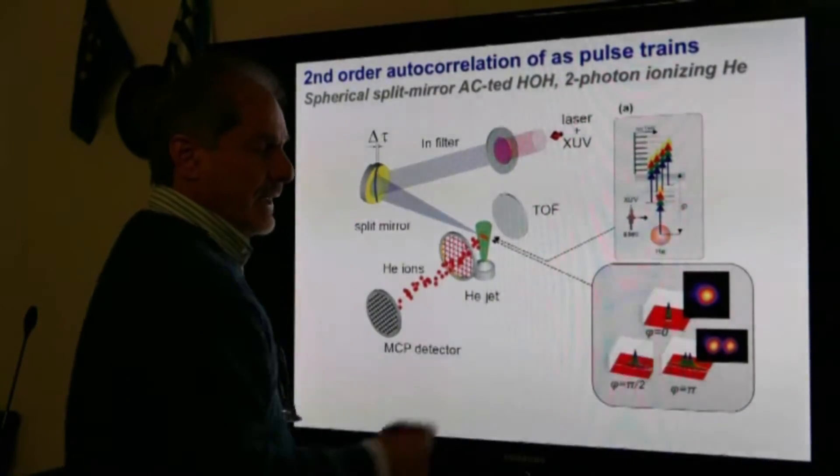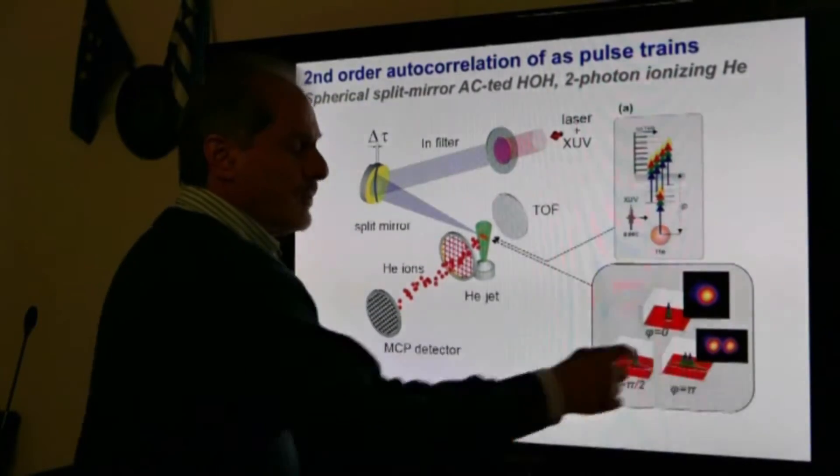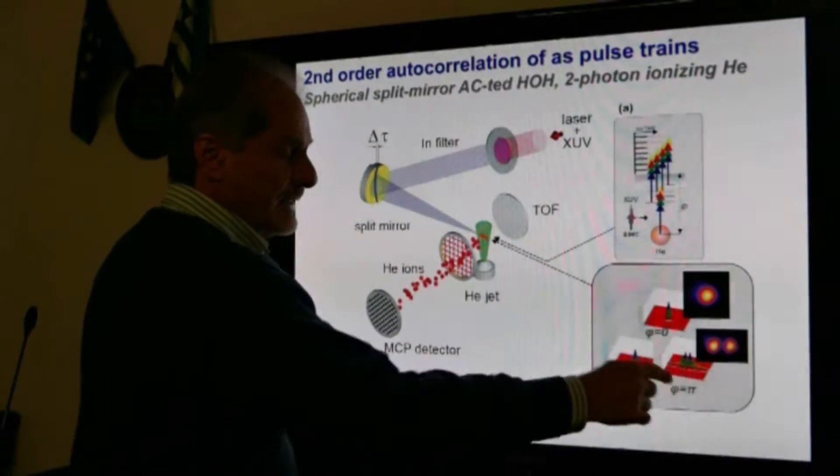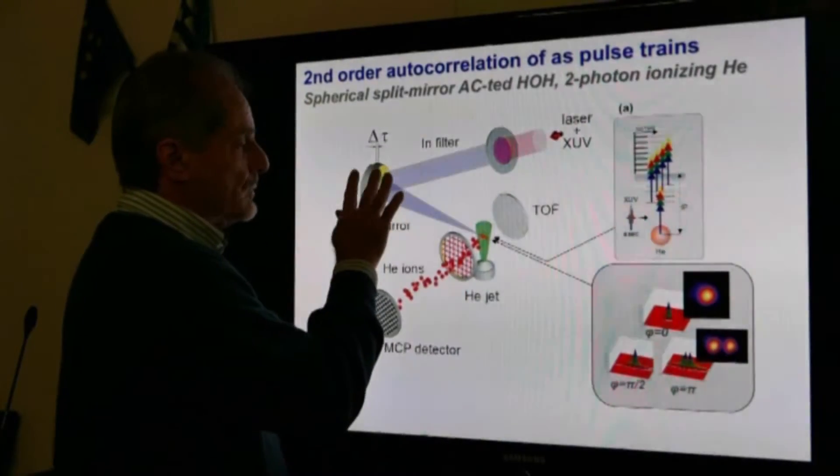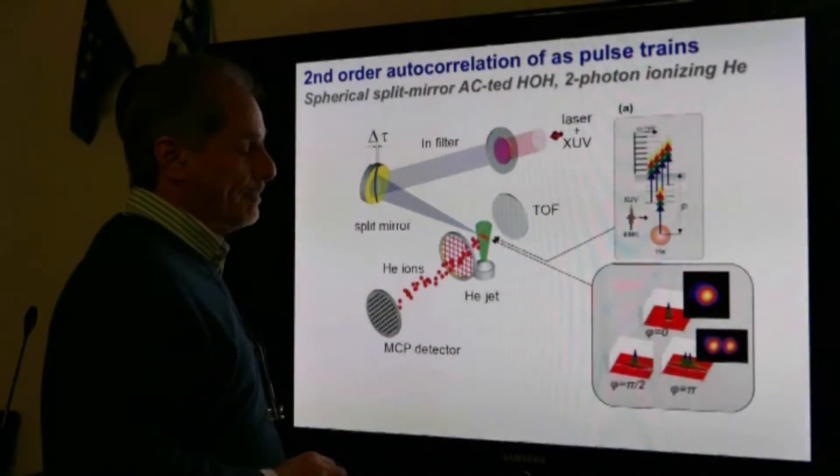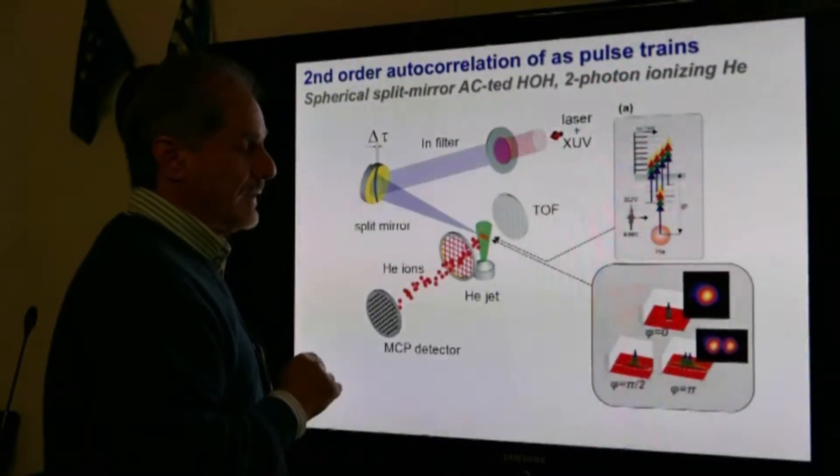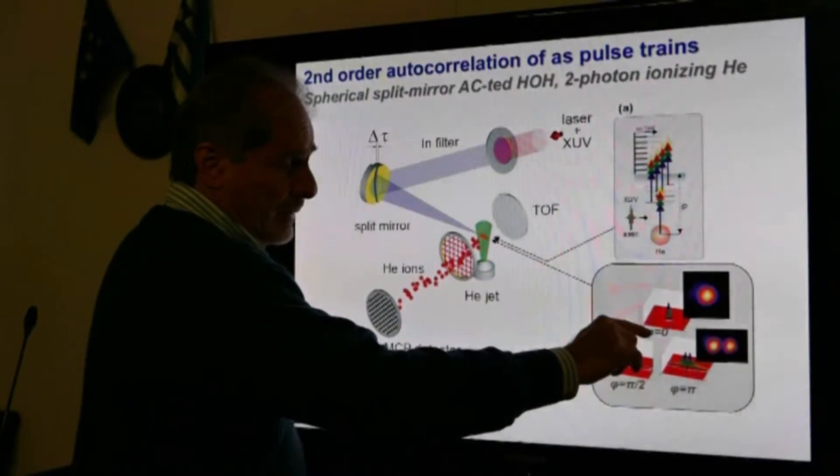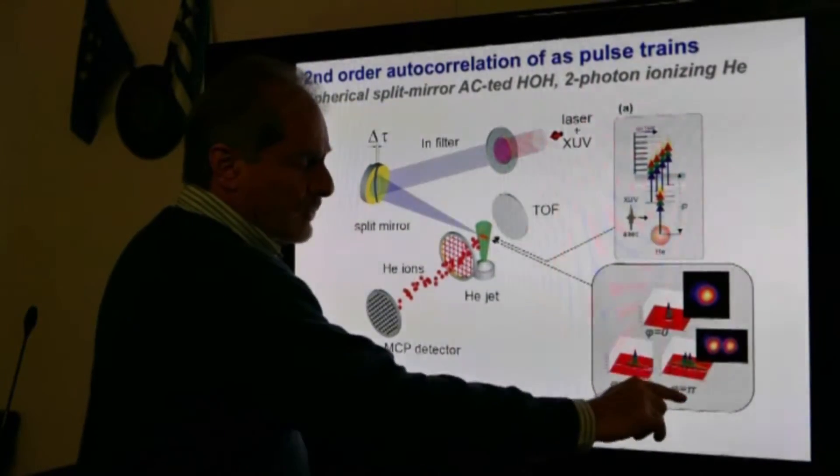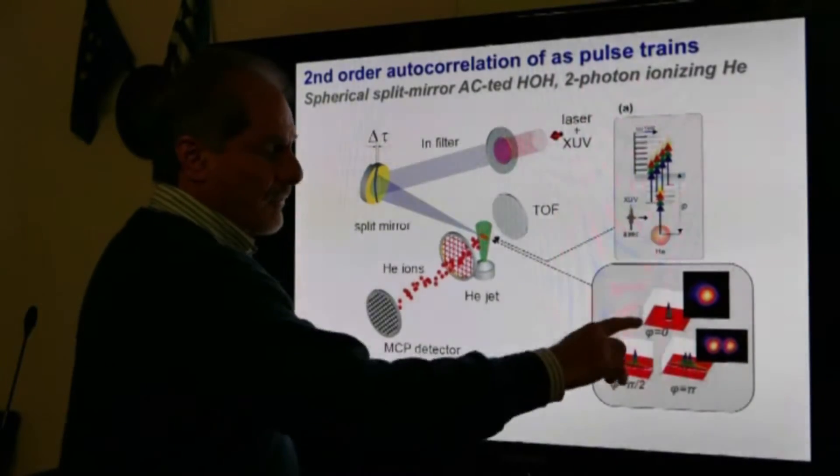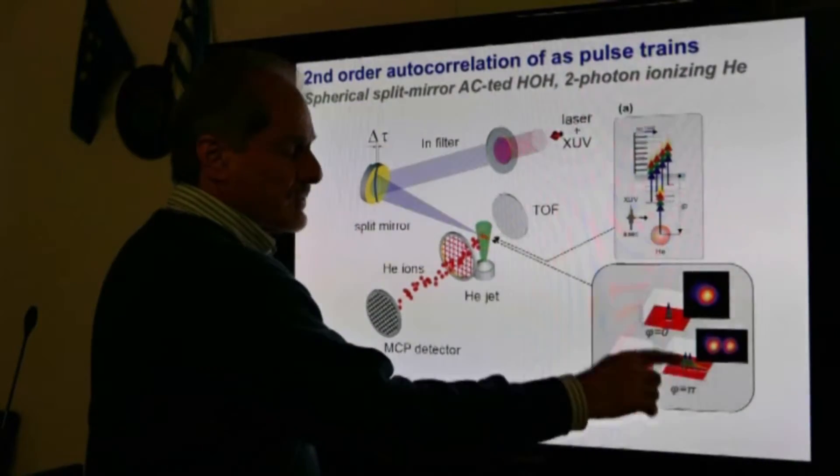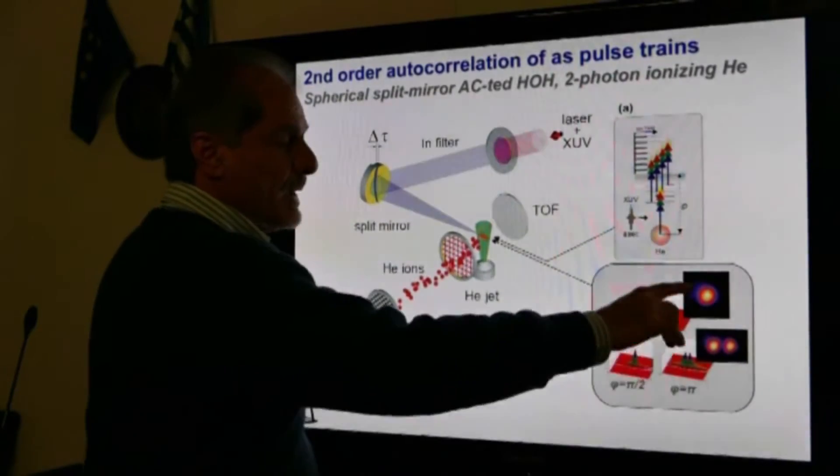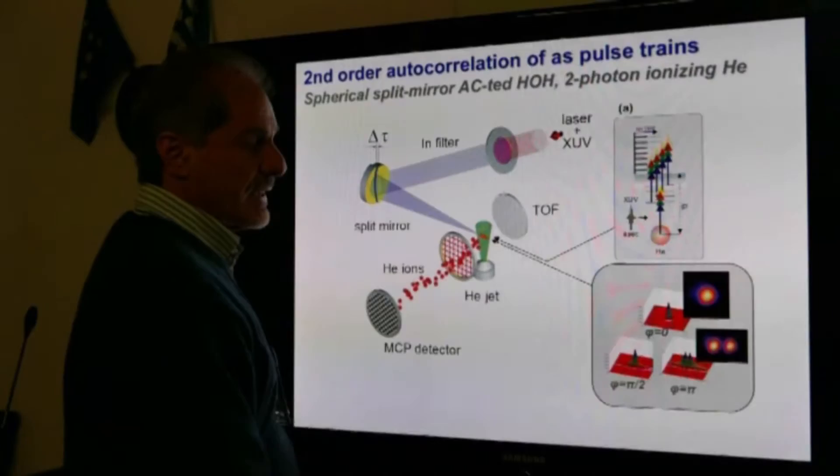not for harmonics but for the laser beam. Those graphs are calculated and those two are measured images for three different phase differences between the two parts of the laser radiation. Phase difference 0, π/2 and π, and for φ equal to 0 and π you see the distributions of the intensity measured by a CCD camera here.